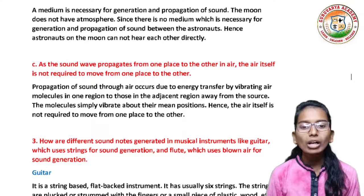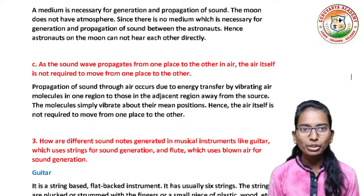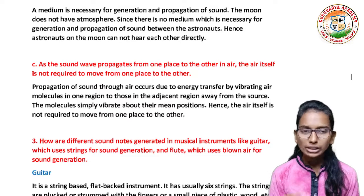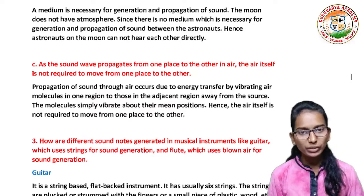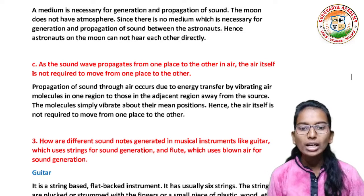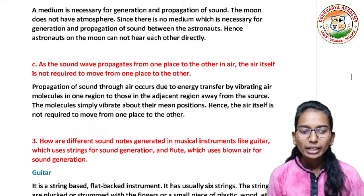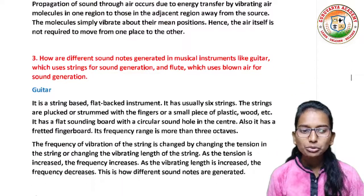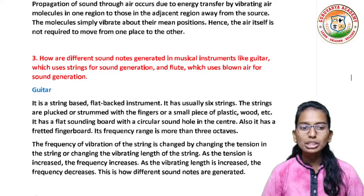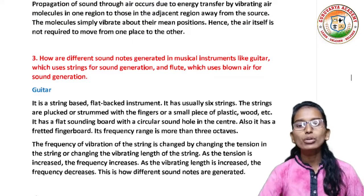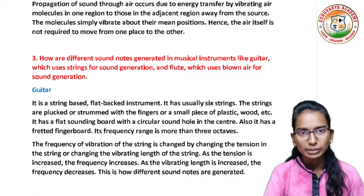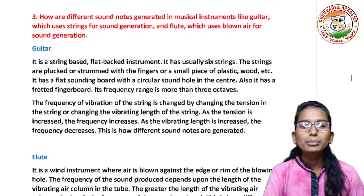The third question is: How are different sound notes generated in a musical instrument like a guitar, which uses strings for sound generation, and a flute, which uses a column of air for sound generation?